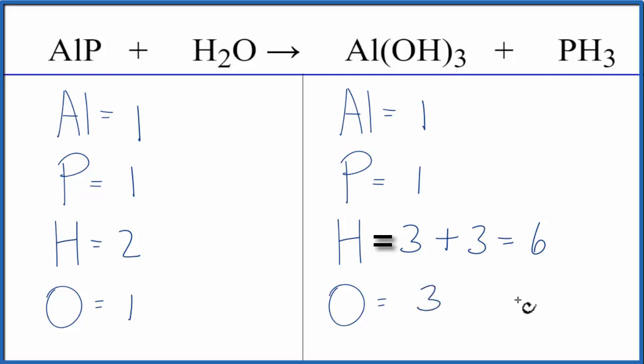Why don't we fix the hydrogens first? We could put a 3 in front of the H2O. 2 times 3, that would give us the 6, so we balance the hydrogens.